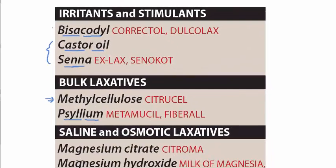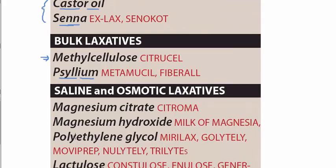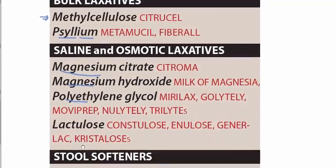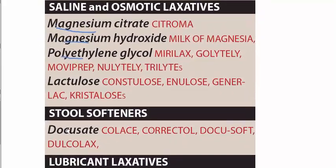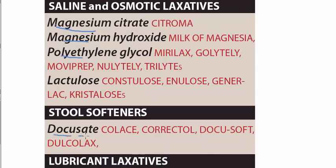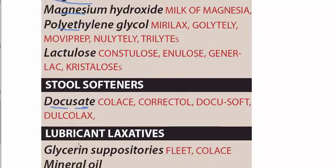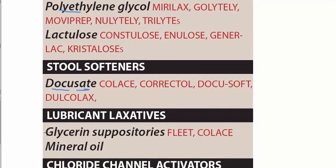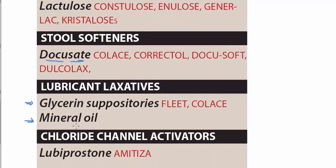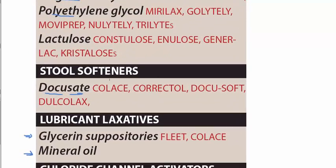Then saline and osmotic laxatives: magnesium citrate, magnesium hydroxide, polyethylene glycol, and lactulose. The stool softeners include docusate. The lubricant laxatives are glycerin suppositories and mineral oil, while chloride channel activators include lubiprostone. So these are the drugs used in GI conditions.